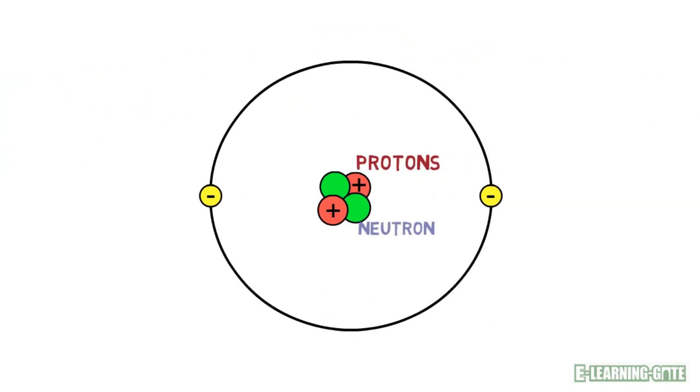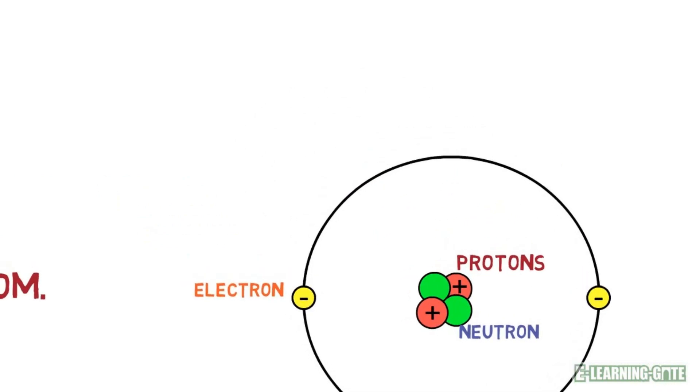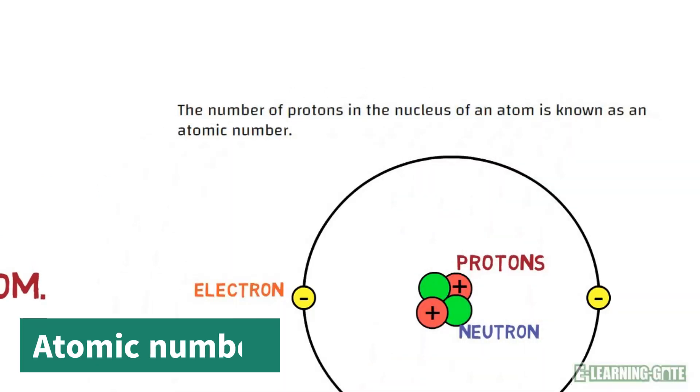Atoms have protons, neutrons, and electrons. The number of protons in the nucleus of an atom is known as an atomic number.